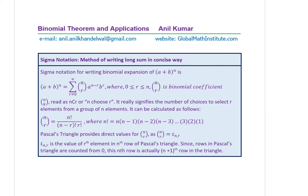Now we'll cover the notations we have been learning. The sigma notation is used to write in very short form a series of addition. The expansion of (a+b)^n can be written with sigma notation. (a+b)^n equals the sigma from r=0 to n of nCr · a^(n−r) · b^r, where r is between 0 and n both included. So nCr is the binomial coefficient — if r is 0, it will be nC0 · a^n; when r is 1, it will be nC1 · a^(n−1) · b, and so on.